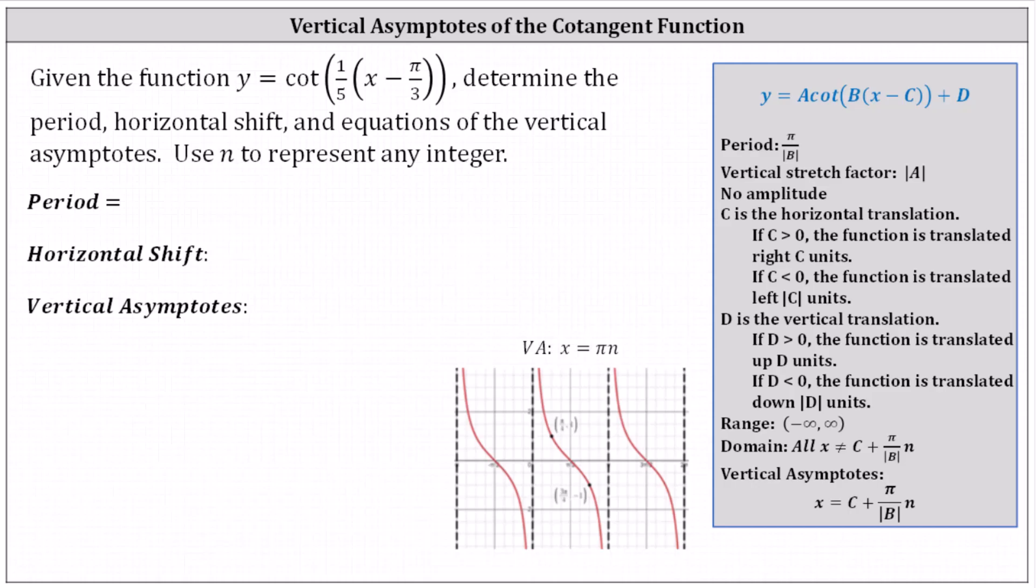The given function is in the form y equals a times cotangent of the product of b and the quantity x minus c plus d. Therefore, let's begin by determining the values of a, b,